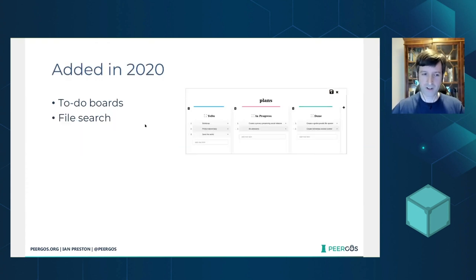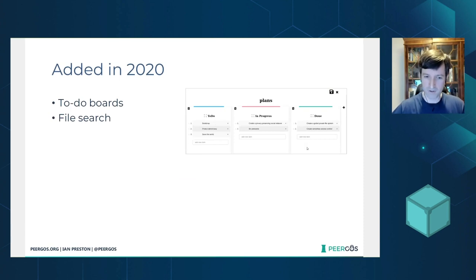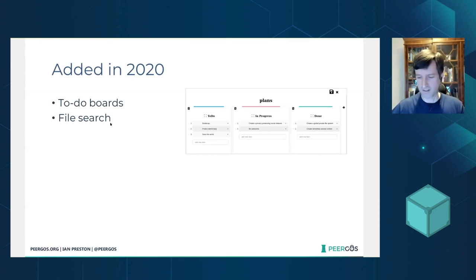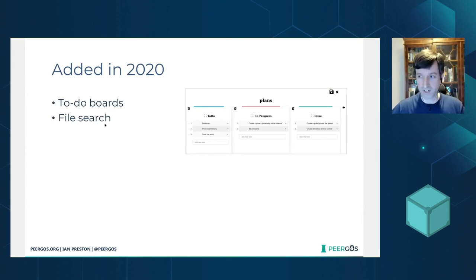In 2020, we added to-do boards, or Kanbans, so you can plan whatever you're trying to plan privately. We also added fast encrypted file search. That sounds trivial, but in an end-to-end encrypted system it's actually pretty hard to efficiently do file search — we were pleasantly surprised with how fast it turned out to be.